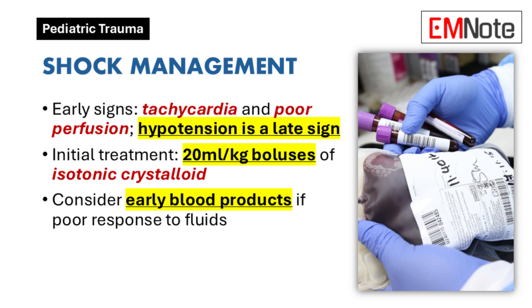Shock Management: Children often compensate for shock differently than adults, making it crucial to recognize subtle signs. Tachycardia and poor perfusion, such as pallor and delayed capillary refill, may be the earliest signs of shock, while hypotension is a late and dangerous finding. Fluid resuscitation should be initiated promptly with 20 mL per kg boluses of isotonic crystalloid, and blood products should be considered early in the resuscitation if there is ongoing hemorrhage or a poor response to fluids.